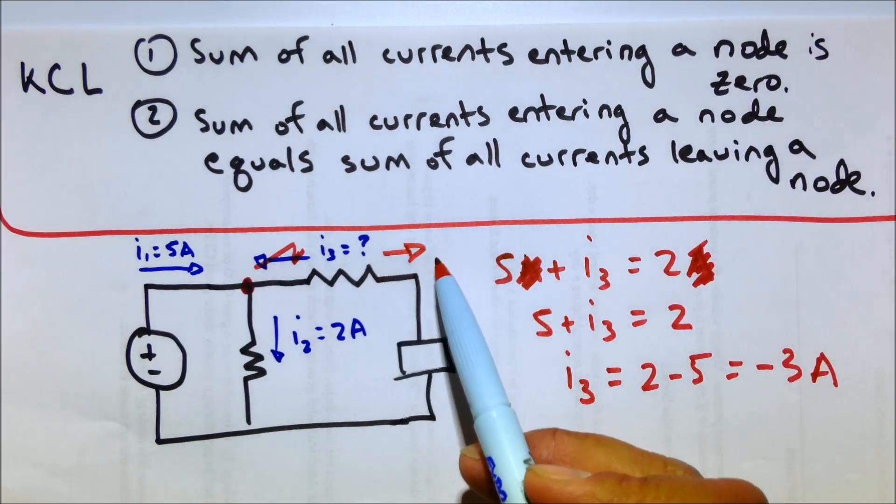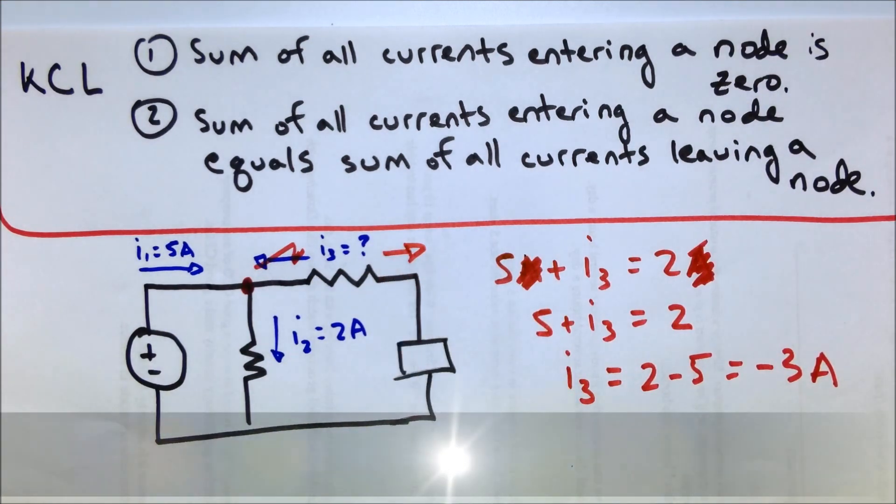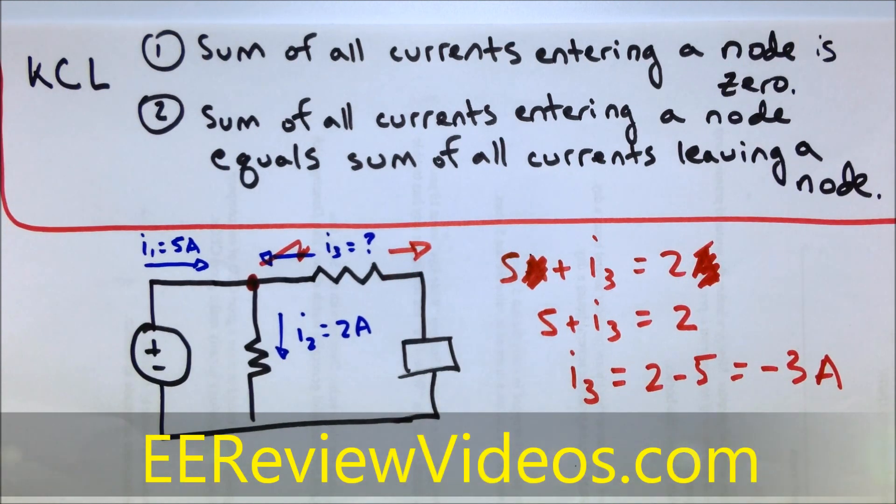And then our I3, if we had labeled it that way, our I3 would be positive three amps. Okay, hopefully that helps a little bit with understanding Kirchhoff's current law.